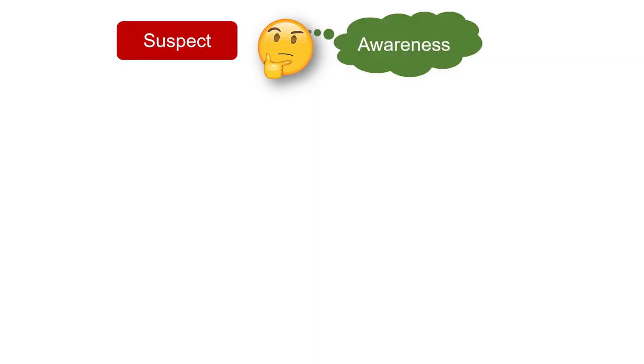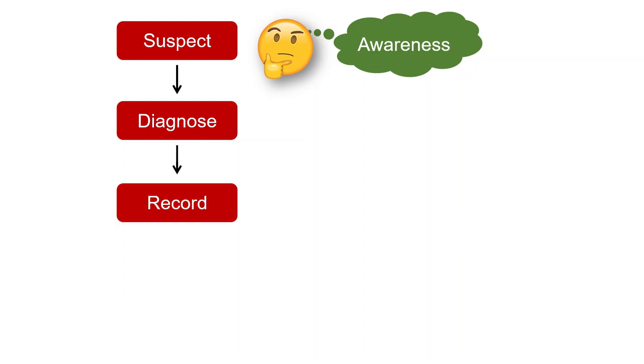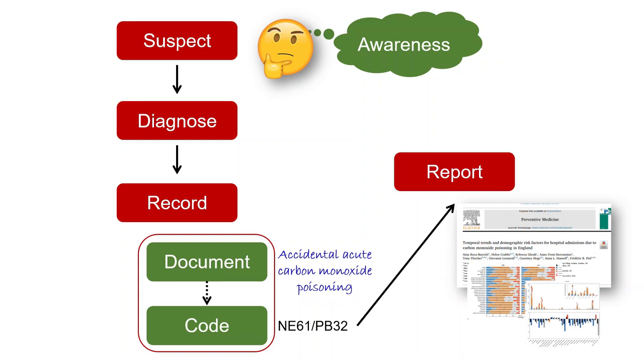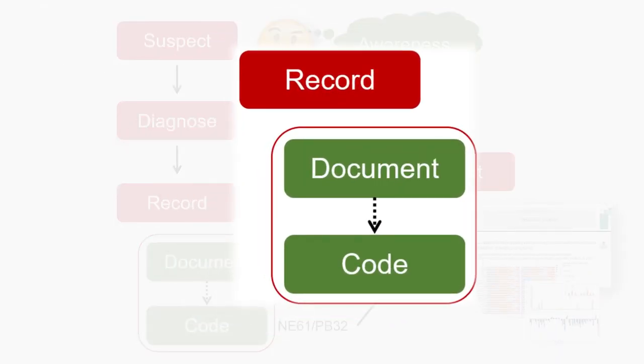For carbon monoxide to take its place as a public health issue, doctors need to consider carbon monoxide as a possibility in the emergency department, and for that they need to be aware of the problem. Once identified, they also need to report it. This includes two steps: documenting the diagnosis, followed by translating that into codes for statistical reporting. Producing evidence-based facts is the best way to raise awareness, and in this presentation we'll focus on the record part of this cycle.